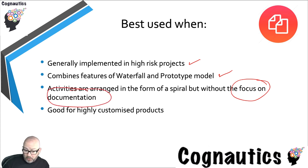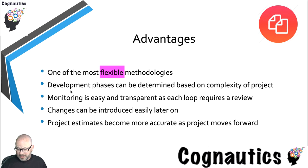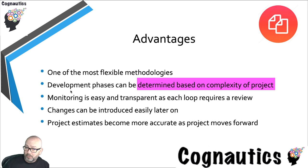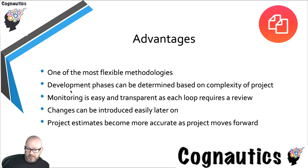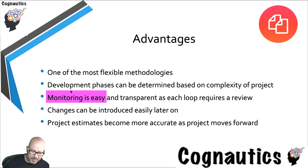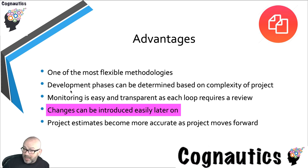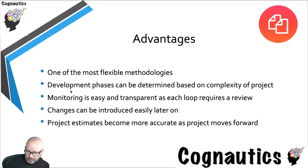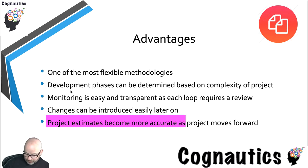The focus is on giving the customer working software, not on delivering documentation. Like the spiral, it's good for highly customized projects — it's the most flexible methodology. The developmental phases can be longer or shorter depending on what's required. Monitoring is easy and transparent, but monitoring is less easy within agile than within the spiral because it is more fluid. However, changes can be introduced easily later on — that's one of the huge advantages of both the spiral and agile methodology.